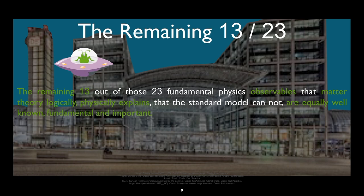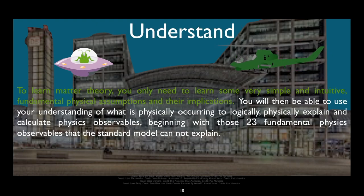The remaining 13 out of those 23 fundamental physics observables that matter theory logically physically explains that the standard model cannot are equally well known, fundamental, and important. To learn matter theory, you only need to learn some very simple and intuitive fundamental physical assumptions and their implications. You will then be able to use your understanding of what is physically occurring to logically physically explain and calculate physics observables, beginning with those 23 fundamental physics observables that the standard model cannot explain.